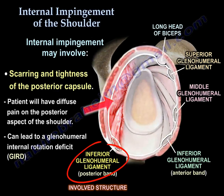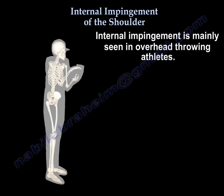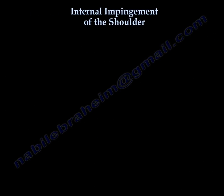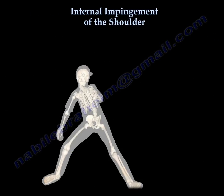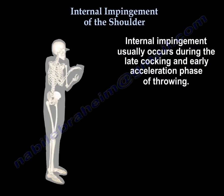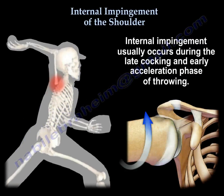Internal impingement may involve scarring and tightness of the posterior capsule. The patient will have diffuse pain on the posterior aspect of the shoulder. Internal impingement can lead to glenohumeral internal rotation deficit (GIRD). It is mainly seen in overhead throwing athletes, and a thrower with shoulder pain should be evaluated for internal impingement. The condition usually occurs during the delayed cocking and early acceleration phase of throwing.